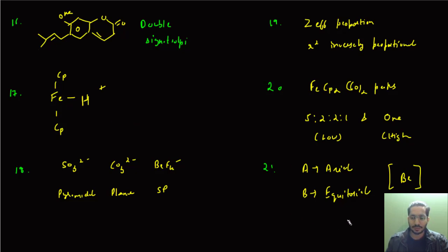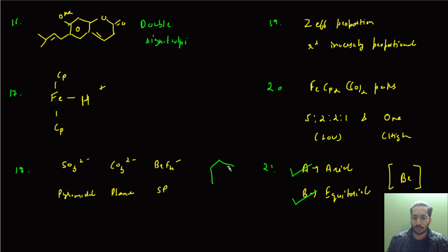There was one more organic chemistry question where a cyclohexane structure was given and they asked for the orientation of bromine. There were two products: in product A, the orientation was axial, and in product B it was equatorial. In one case, the methyl and bromine were on the same carbon — for that case it would be axial — and for the other case it is equatorial.